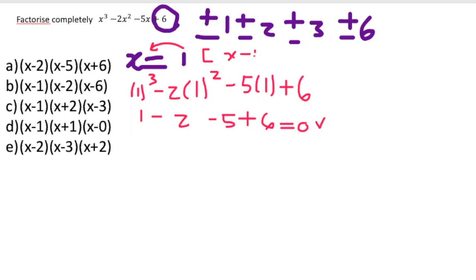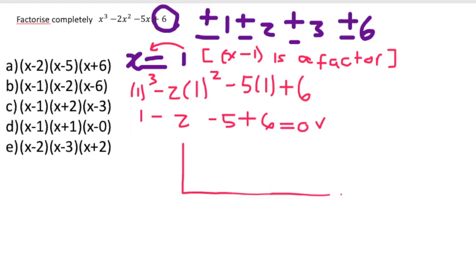Since X equals one gives zero, I carry the one over so the first factor is (X minus one). Now I need to find the remaining factors by dividing, and I'll use synthetic division to do that.